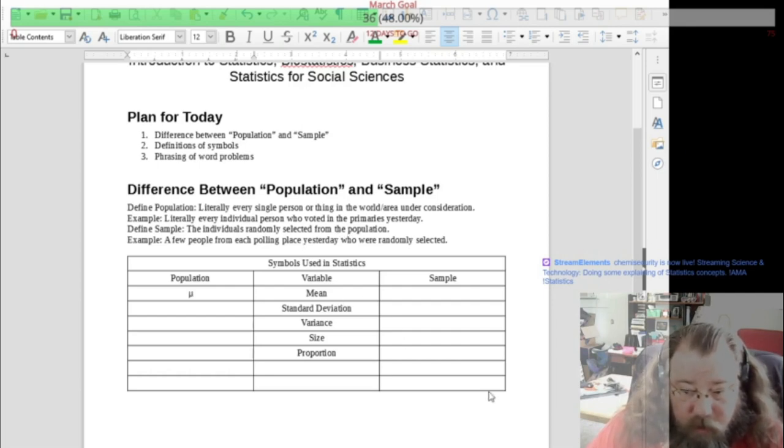So the meaning for the population is going to be what is called the Greek letter mu.